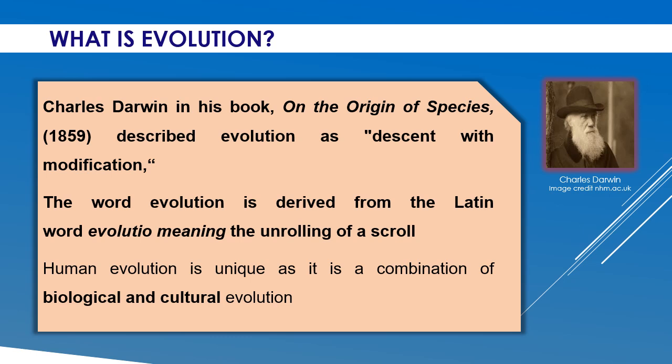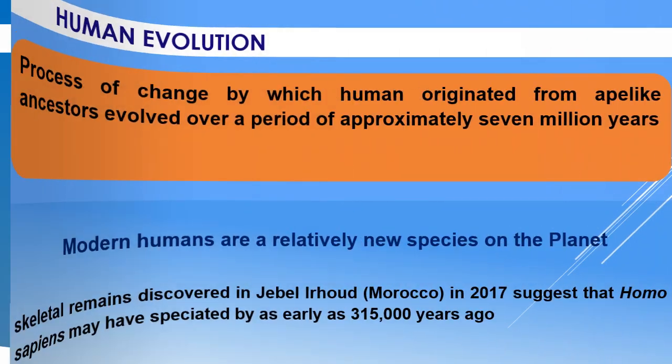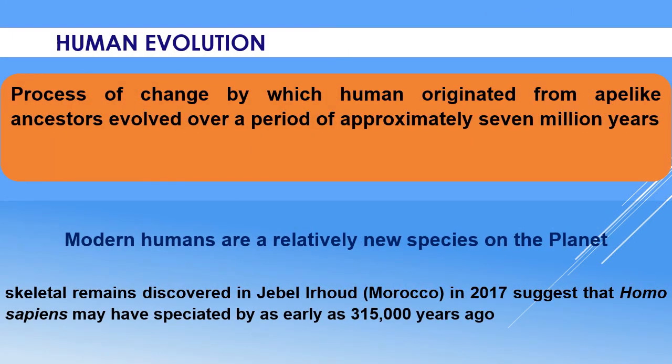Charles Darwin described evolution as descent with modification. But unlike the evolution of other animals and plants, human evolution is unique because it is a combination of biological and cultural. We can define human evolution as a process of change by which humans originated from ape-like ancestors over a period of approximately seven million years.